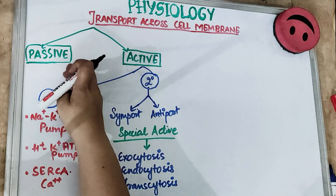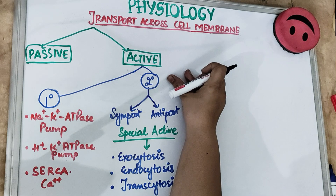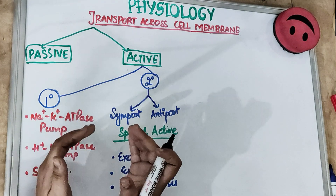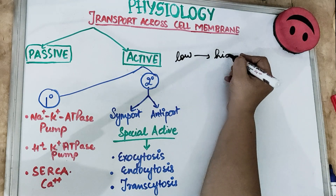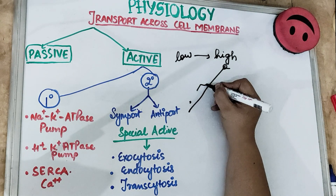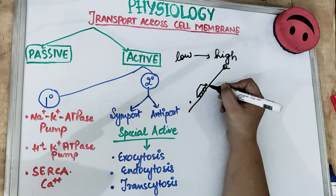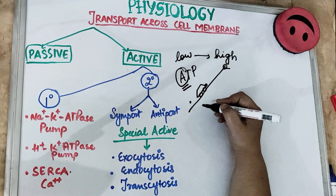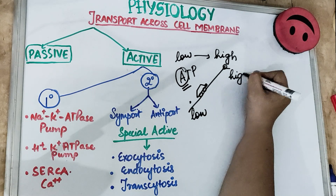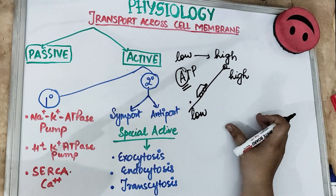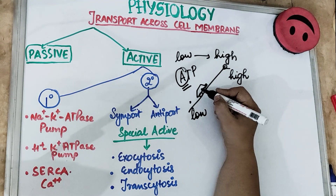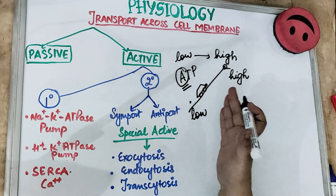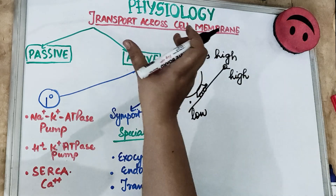In the previous lecture we covered passive transport. Today we are studying active transport. It is the uphill process — the uphill movement. In this process, the substance moves from low concentration to high concentration. Because we are climbing uphill, we require fuel, we require energy. This is known as active transport, which requires ATP. So 'A' signifies active and 'A' signifies ATP. It is against the concentration gradient and against the electrochemical gradient. It requires energy and a carrier protein to carry substances across the cell membrane. It requires ATP and metabolic energy, hence it is termed active transport.